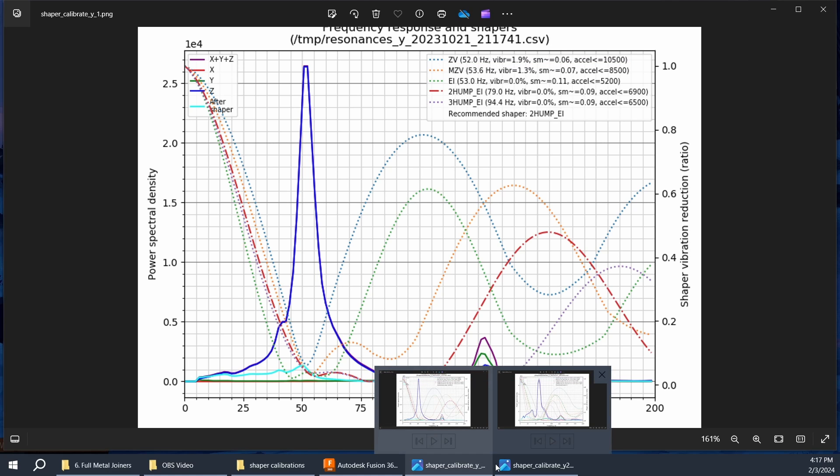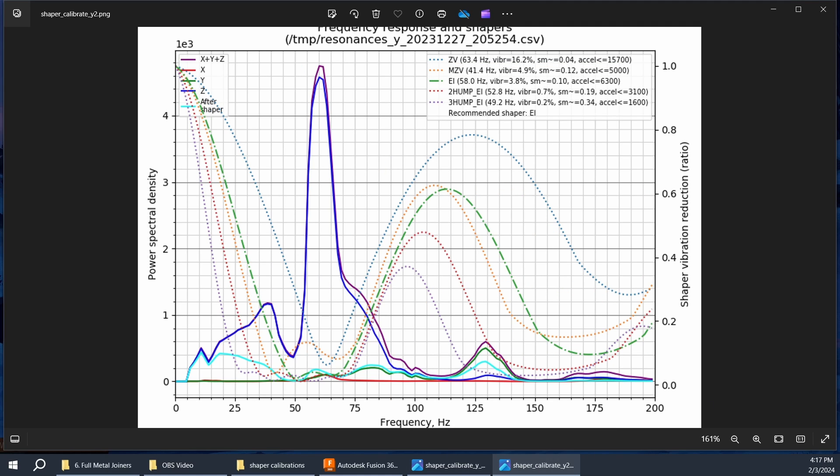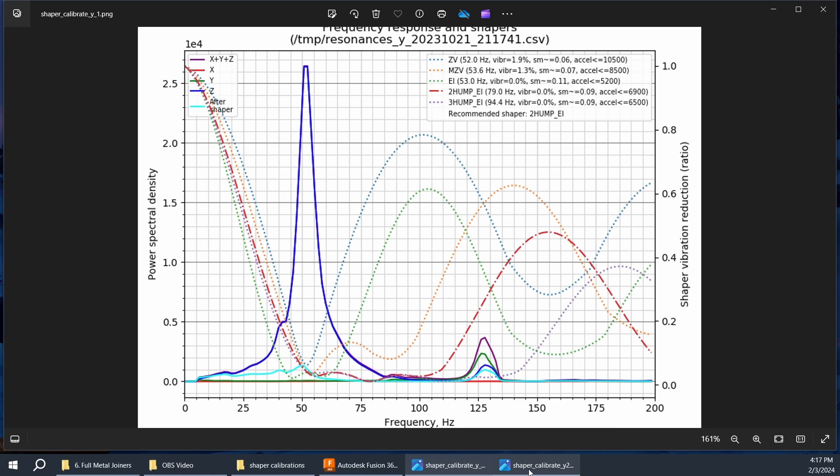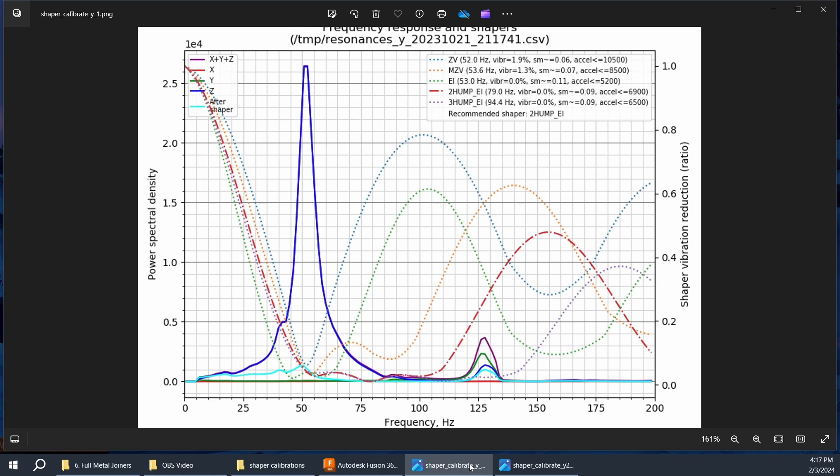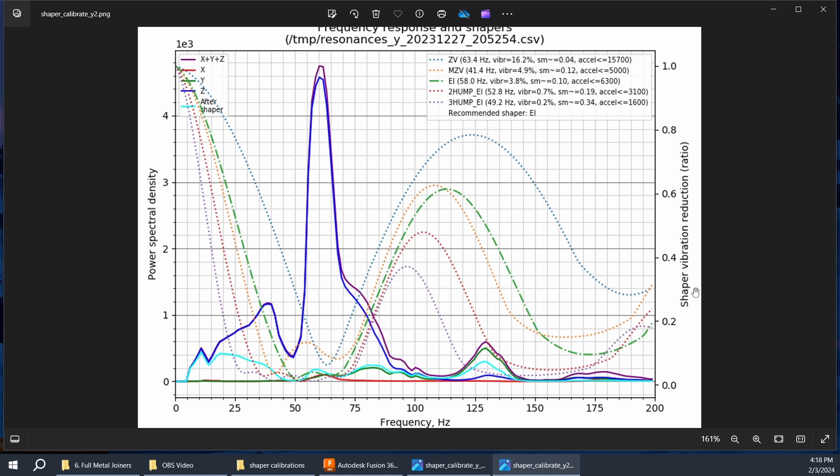When I just did it on the new setup, we've got a jump to 63 Hz and a recommended acceleration of 15,700. So it's an increase of about 11 Hz and another 5,000 acceleration, which is a pretty good jump. A 13.4 Hz increase just by changing the joiners. I'm pretty happy with that.